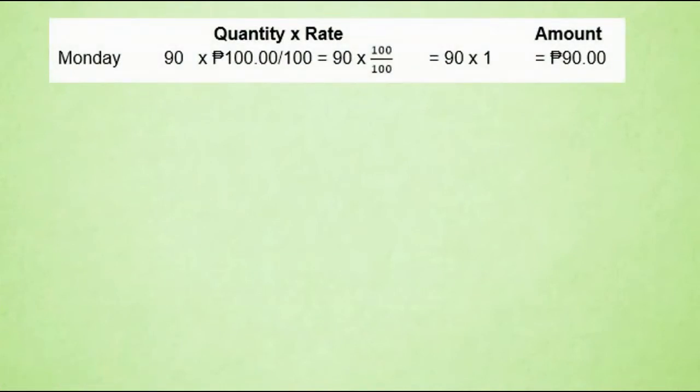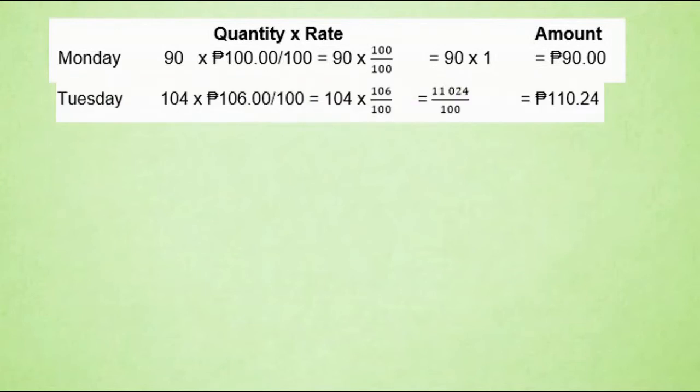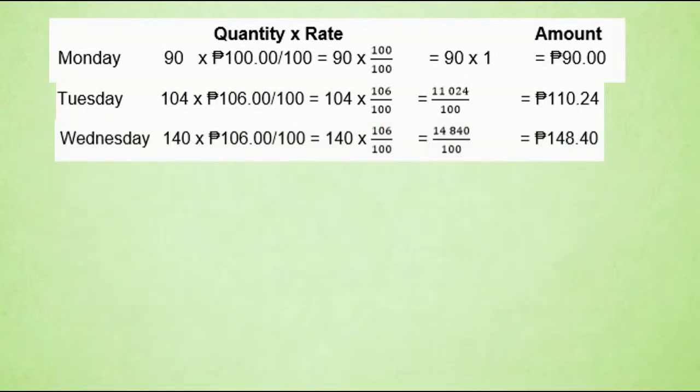So this is now the result. Monday: 90 is multiplied by 100 divided by 100, which equals 90 multiplied by 1, which is 90 pesos. Tuesday: 104 multiplied by 106 divided by 100, that is 11,024 over 100, or 110 pesos and 24 centavos. Wednesday: 140 multiplied by 106 divided by 100, that is 14,840 divided by 100, which is 148 pesos and 40 centavos.